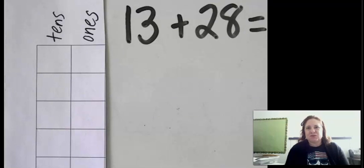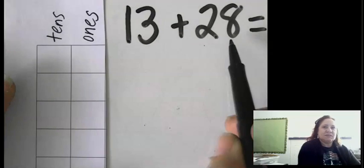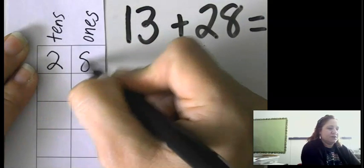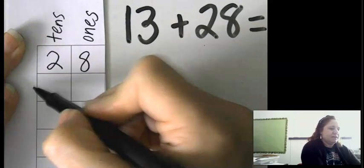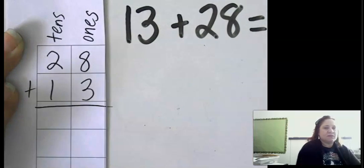Okay, so first thing we're going to do is stack them on top of each other. But remember, you always put the largest number on top. So 28 is bigger than 13, so I'm putting it first. And then we're adding 13.